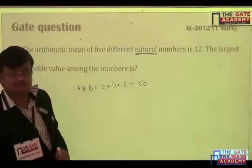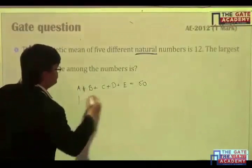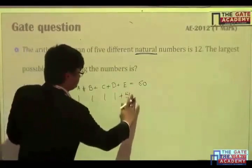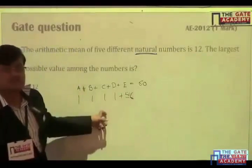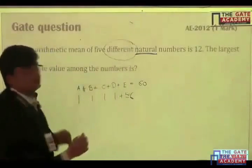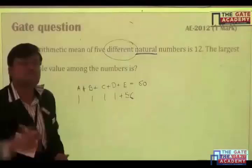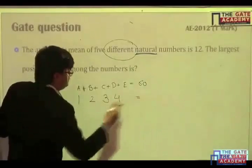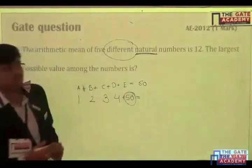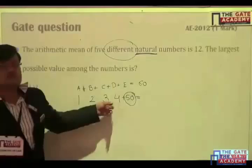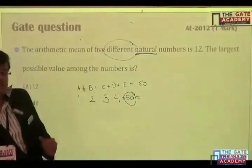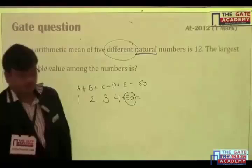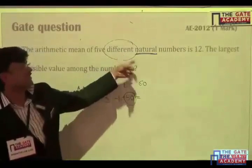So, in natural number, you know that 0 will not come. So, now what are the options? You can assume 1, 1, 1, 1 and this number to be 56. Now again, this logic also wrong. Why? Because of this word. Different. That means all the numbers should be different. So, if you have assumed this to be 1, this should be 2, 3, 4. Then, what will be the remaining? 50. Because 1+2+3+4 is 10. So, 60 minus 10, only 50 is remaining. So, largest possible value among the number is 50. You got the logic, no? So, words are also playing important role. Different natural number.